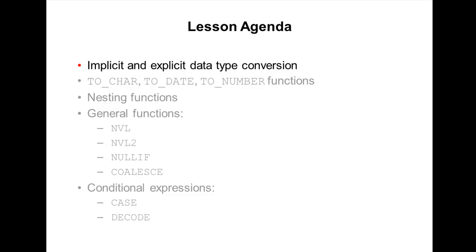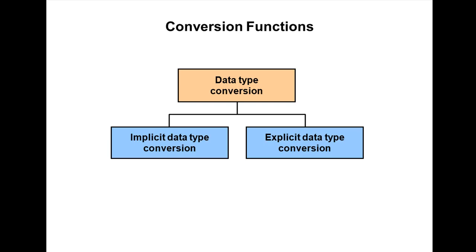Conversion functions convert a value from one data type to another. Generally, the form of function names follows the conversion from one data type to another data type. The first data type is the input data type and the last data type is the output. There are two types: implicit data type conversion and explicit data type conversion.